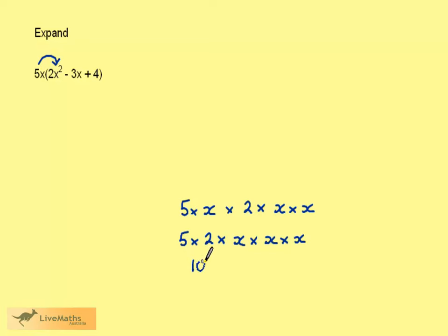5 times 2 is 10, and x times x times x is x cubed. So here we have 10x cubed.